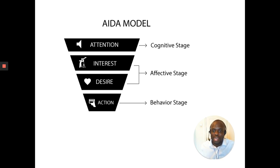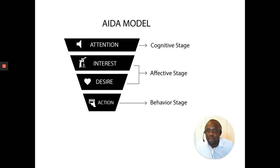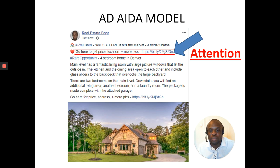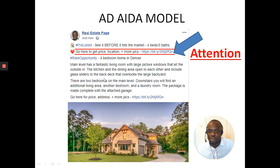Whenever we are creating our ad, we want to first of all grab attention, and then after the attention, nurture some more interest into the ad, and then we're going to create more desire, and then finally there's going to be a call to action. You can see here that we are trying to draw the attention by saying there's a pre-listed property — look at it before it comes onto the market. The emojis just show that we are making it stand out a little bit, without going overboard.